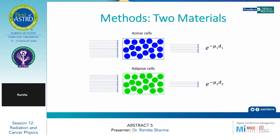When radiation passes through acinar cells as well as adipose cells, the two different attenuations will be mu-1 and mu-2.